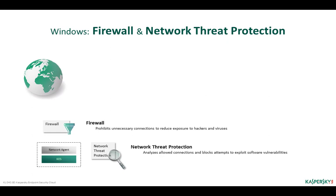Some components of Kaspersky Endpoint Security for Windows do not search for malware — they help to repel threats by decreasing the attack surface. Malware may use various penetration methods: the user might download it from a suspicious website, receive it by email, copy it from an infected removable drive, etc. Some types of malware actively search for ways to penetrate a computer, try to copy themselves over the network, or sneak through a vulnerability. The use of a firewall to block unnecessary connections is another popular method of decreasing the attack surface.